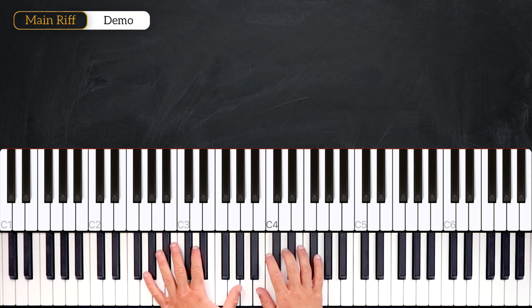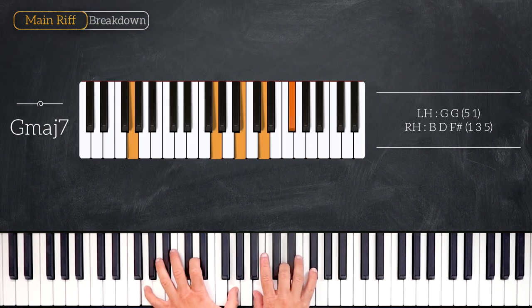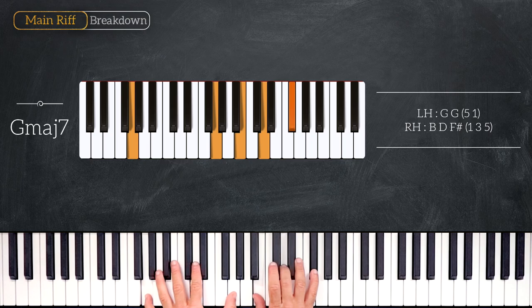Here are the chords. So we start on a G major 7 chord, we'll play an octave G on the left hand and B, D, F sharp on the right.